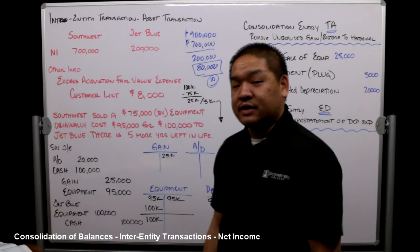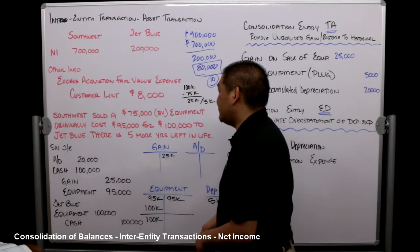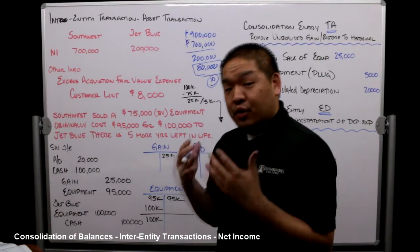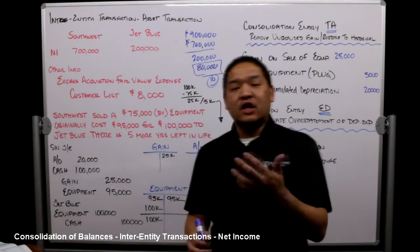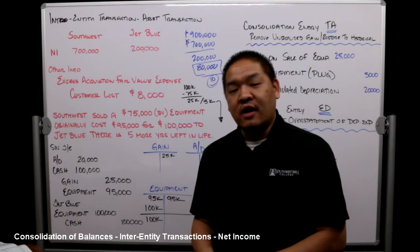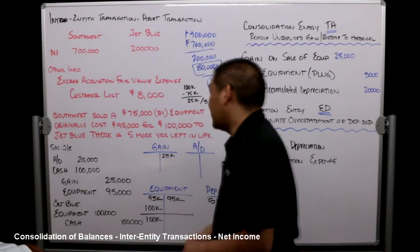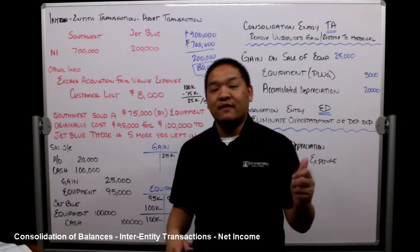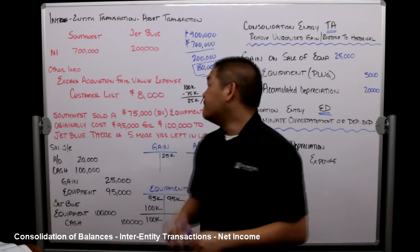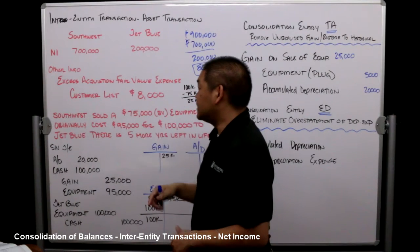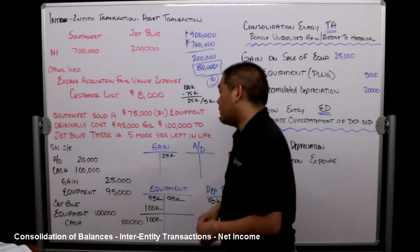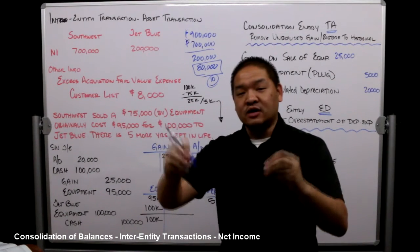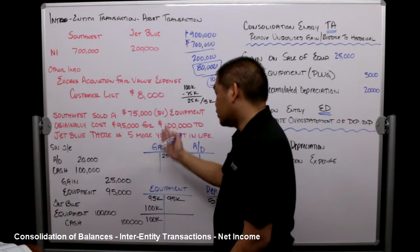Southwest sold a piece of equipment that sits on their books at $75,000. It was originally purchased for $95,000 but they've taken $20,000 of accumulated depreciation, bringing the book value to $75,000. They sold it to JetBlue for $100,000 — not uncommon when transferring assets from subsidiary to parent — so we have a $25,000 profit that Southwest is going to book.